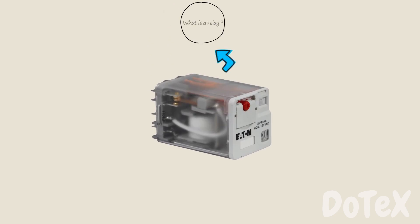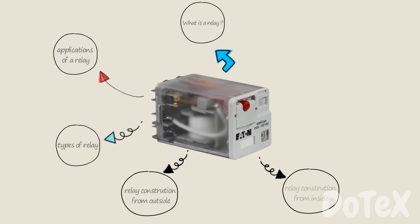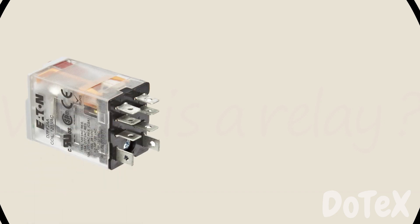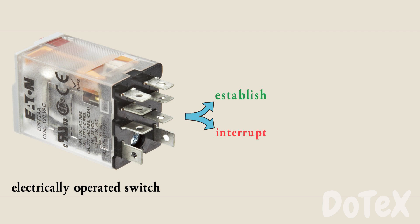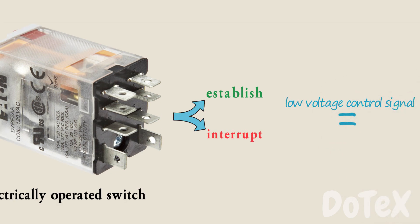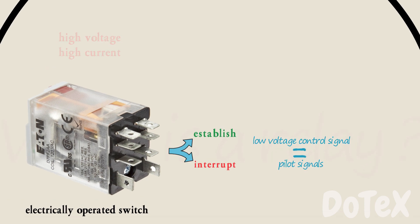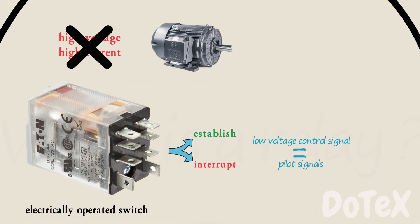In this video our goal is to take a look at a relay and we are going to learn all about these elements. Hopefully by the end you will have a pretty good understanding of what a relay is. Let's begin with what is a relay. A relay is an electrically operated switch usually designed to establish or interrupt low voltage control signals or pilot signals only, not high voltage high current power input used to run an industrial motor.